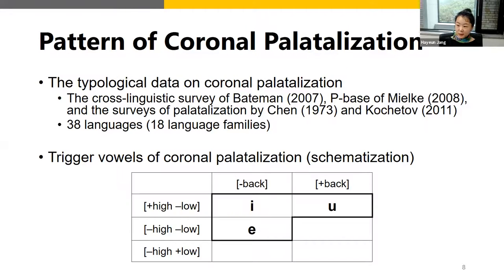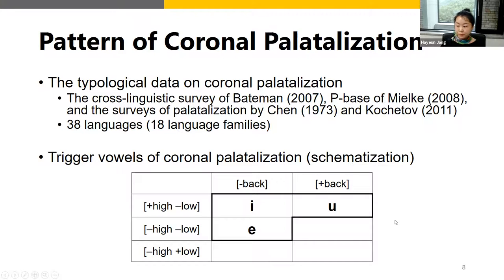So, does the actual pattern match the expectations? To answer this question, I examined cross-linguistic patterns of coronal palatalization. The typological data covers cases of synchronic phonological processes in which vowels trigger full or secondary coronal palatalization of coronal stops in 38 languages belonging to 18 language families. The set of vowels triggering full and secondary coronal palatalization is the same: front high vowels, back high vowels, and front mid vowels can trigger coronal palatalization. However, the implicational relationships between triggering vowels within each type of coronal palatalization are different.